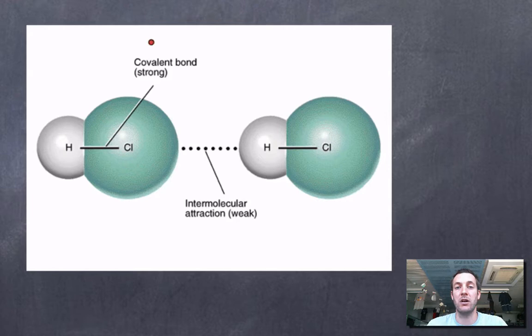These are strong bonds like ionic bonds. There's no point trying to decide which one's stronger. Just think of them as strong. A covalent bond is the electrostatic attraction between a shared pair of electrons and the nuclei of the bonded atoms. That's what a covalent bond is.